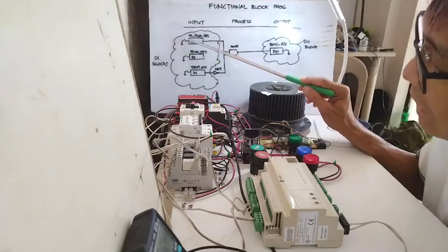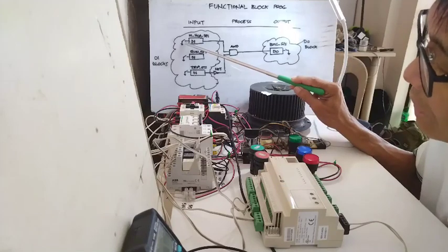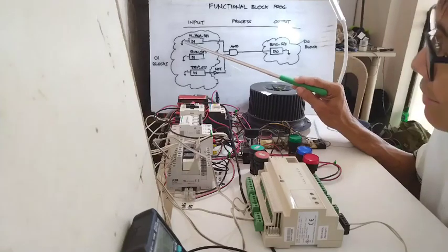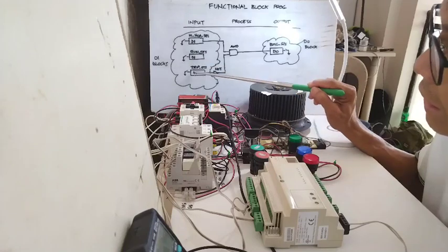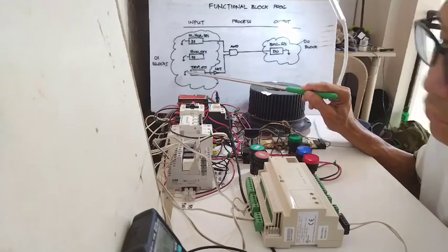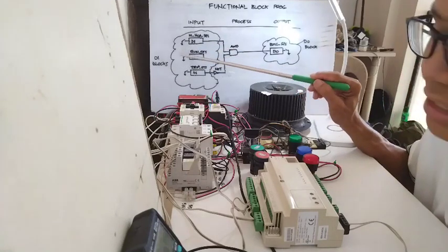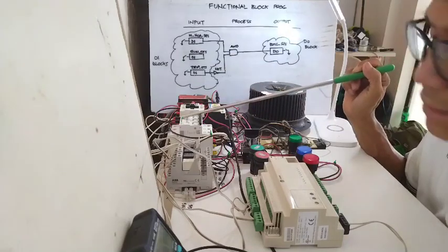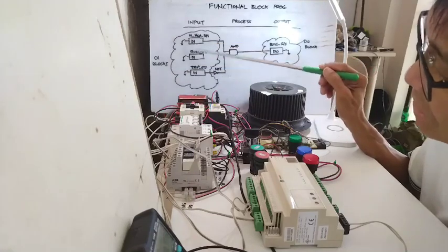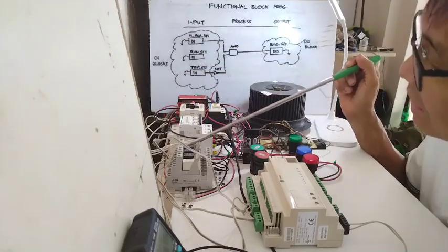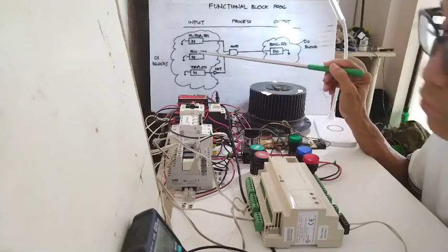As you can see, there is information here showing that this one is coming from a normally open contact — just like this running status, also coming from a normally open contact. Then trip status will also come from a normally open contact. These contacts are the ones we provide in our control panel. We call these BMS points — these three relays here.